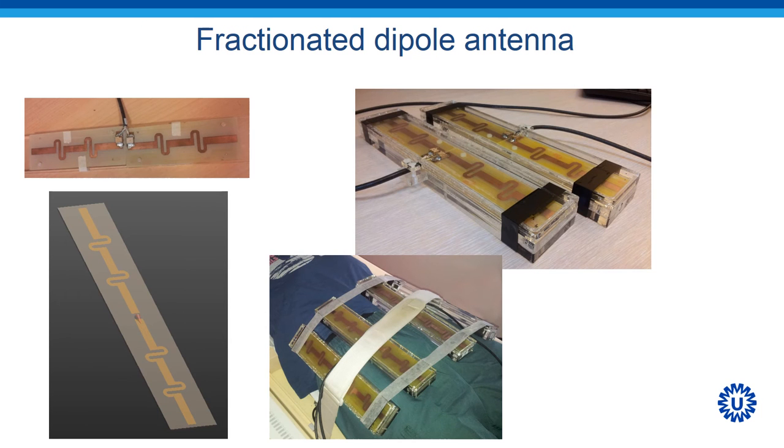From these findings, we have developed the fractionated dipole antenna, which is an antenna where the legs are divided into segments, and the segments are interconnected with a meander that serves as an inductor. We have created an array of eight elements for pelvic imaging, where the elements are aligned around the pelvis, as indicated in the image.